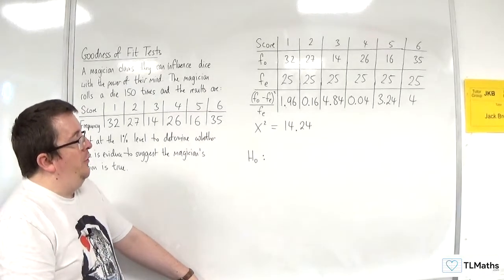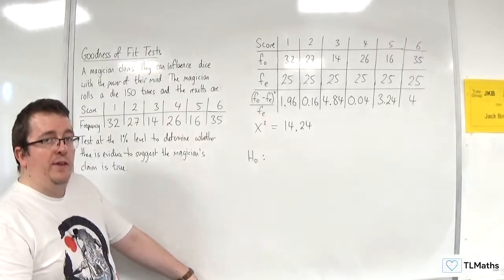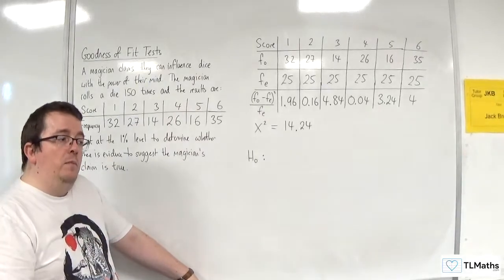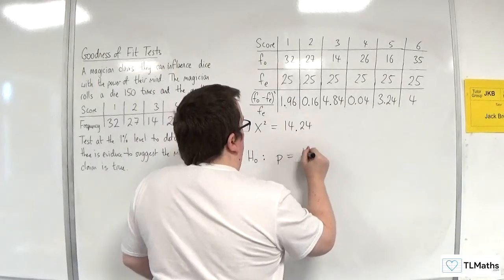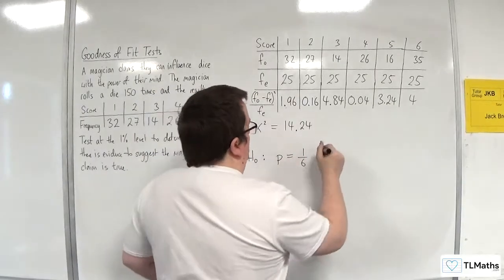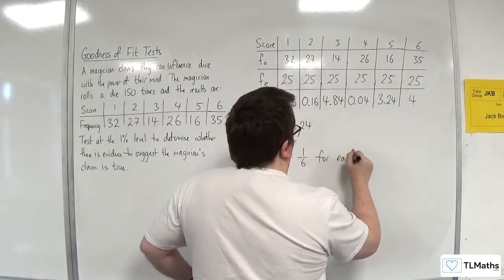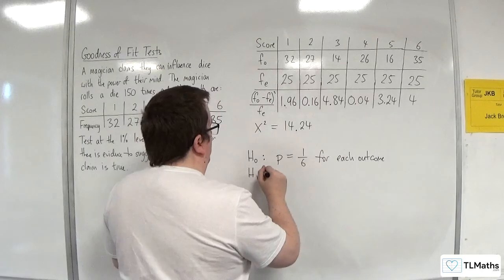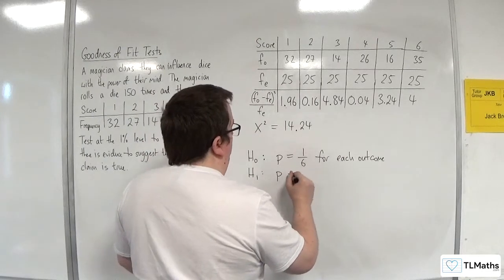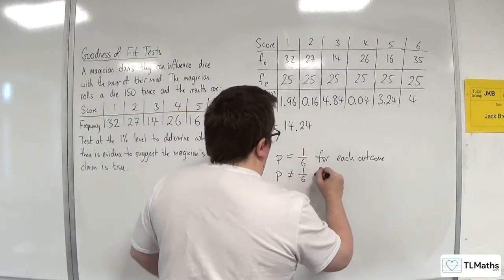Here, the null hypothesis would say that the probability of each outcome is the same. Okay. So, the probability is 1 sixth for each outcome. So, H1 would be that P is not equal to 1 sixth for each outcome.